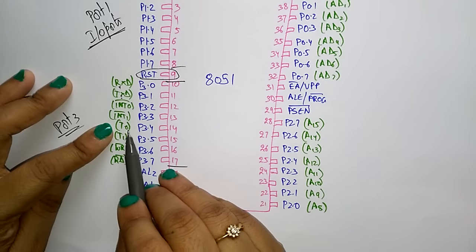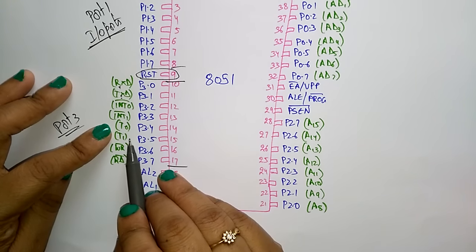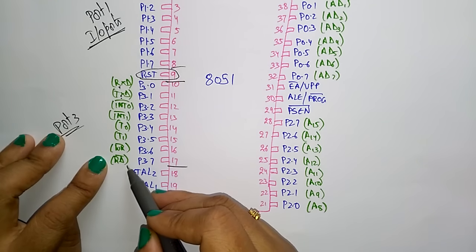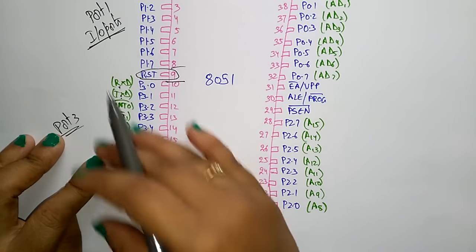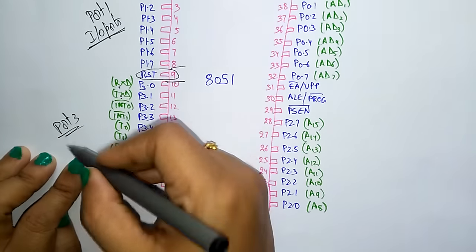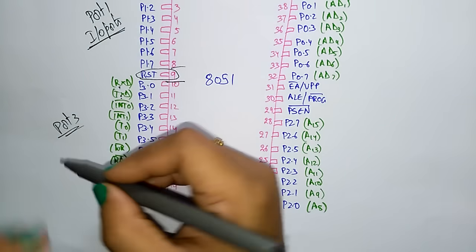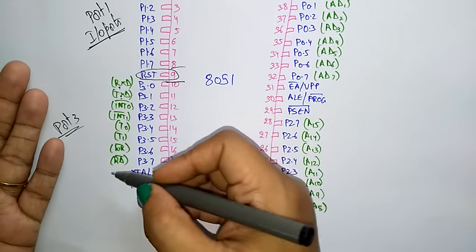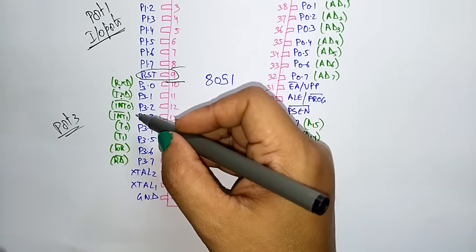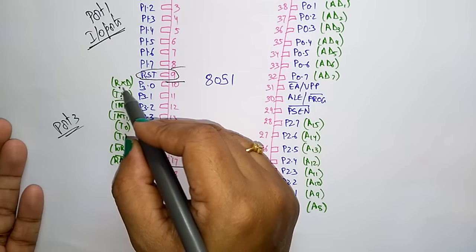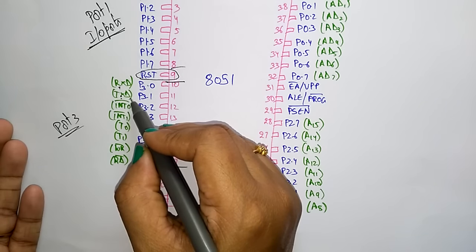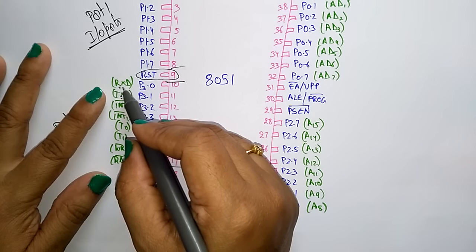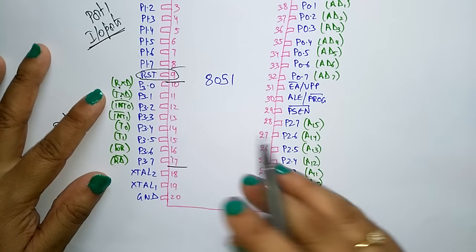Port 3 also provides timer 0 and timer 1 inputs, and control signals including read and write signals. So port 3, pins 10 to 17, can perform different functions: interrupts, timers, control signals, and serial communication signals — receive data and transmit data.